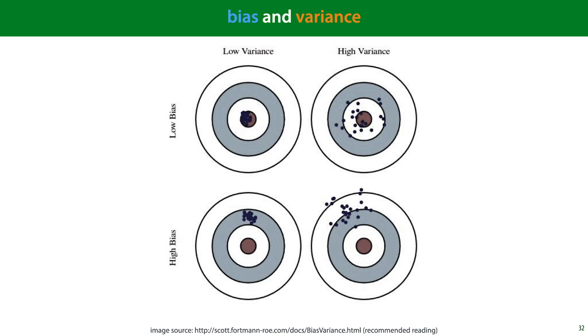One analogy that is often used to explain bias and variance is that of throwing darts at a dartboard. Having low bias and low variance means that you can consistently hit the bullseye with every dart. Having high variance means that you cannot and your throws are spread out, but on average they cluster around the bullseye, and having high bias means that your throws are very consistent and very close together, but that point is very far away from the bullseye.